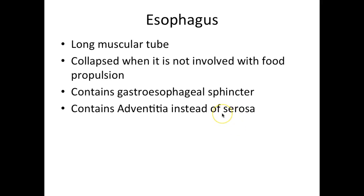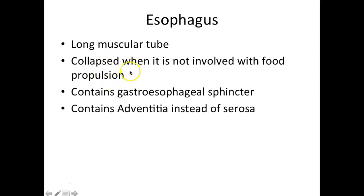The esophagus, while it has all the layers of the mucosa, doesn't have a serosa. Instead, it has something called adventitia on the outermost layer, which is made out of dense connective tissue. There are also sphincters on the top and bottom portions of the esophagus. Whenever you're not swallowing, the esophagus is collapsed — it only opens up when you're swallowing and squeezes the bolus down to your stomach.